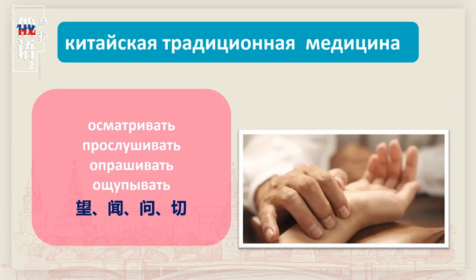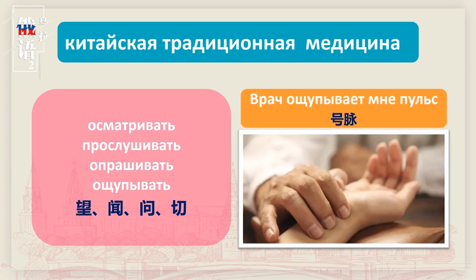прослушивать，расслышать，前面加前缀пра。再来一个详细的询问：我们知道спрашивать，спросить是问，把С换成О，表示详细地问，那么：опрашивать，опросить，就是问诊了。切就是号脉：осматривать（望），осматривать（切）。我们看看这个图片，是不是在号脉啊？врач...